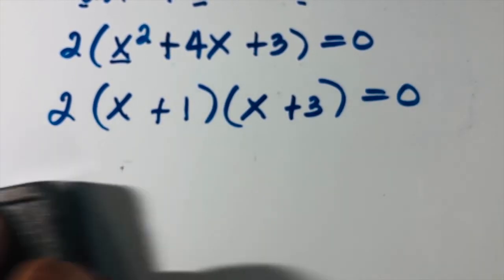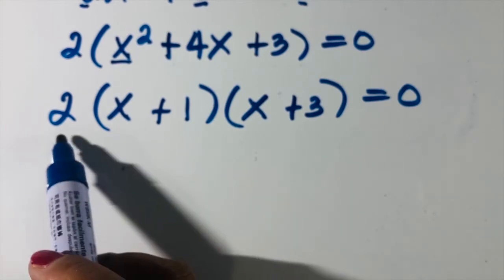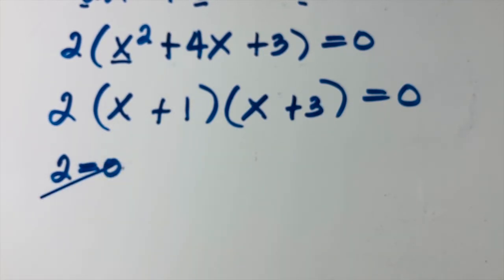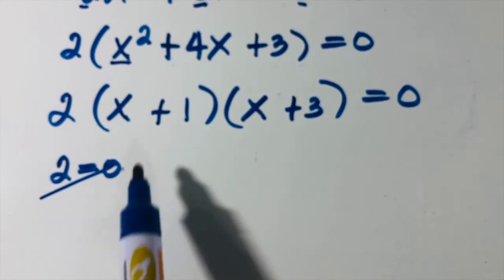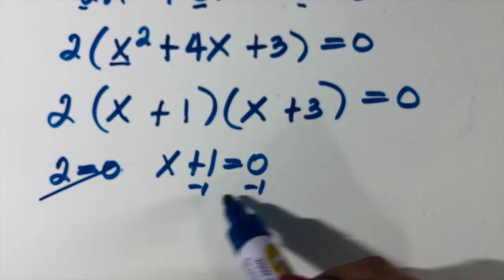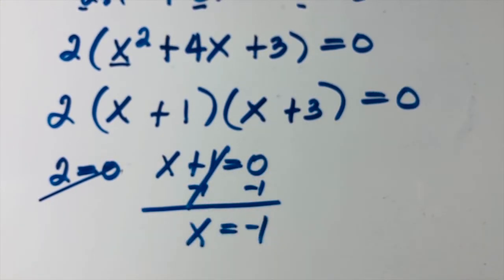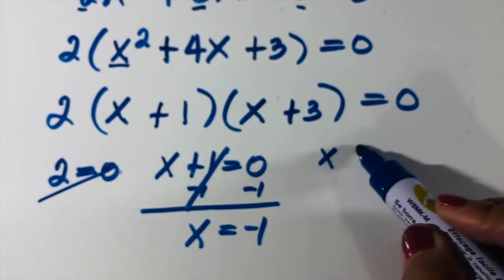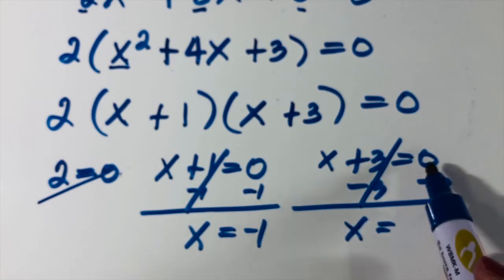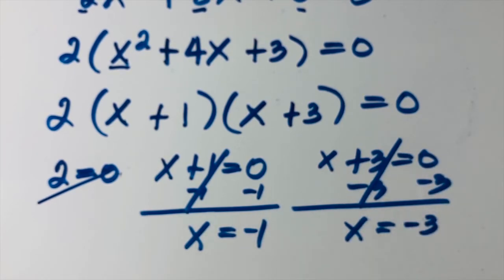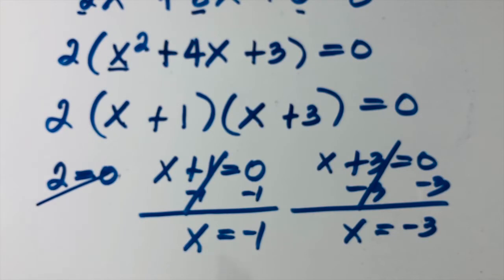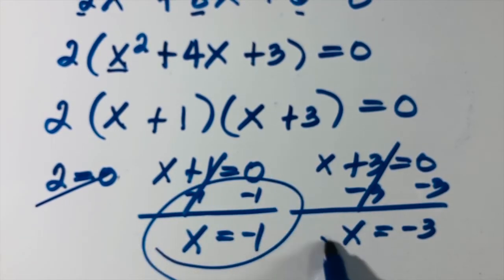We've factored out the GCF of 2 and factored using product and sum. Now we solve using the zero product property. The constant 2 equals zero is not true, so we discard it. x plus 1 equals zero gives x equals negative 1; x plus 3 equals zero gives x equals negative 3. The solutions of 2x squared plus 8x plus 6 equals zero are negative 1 and negative 3.